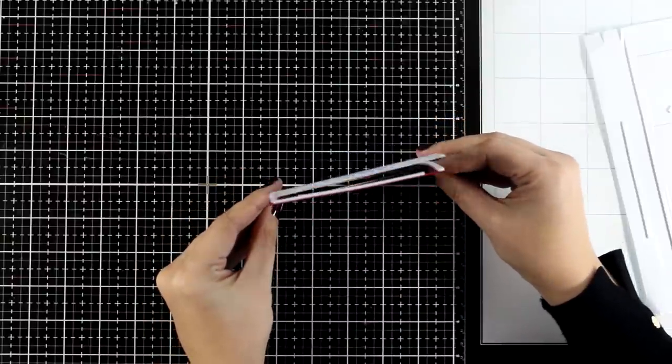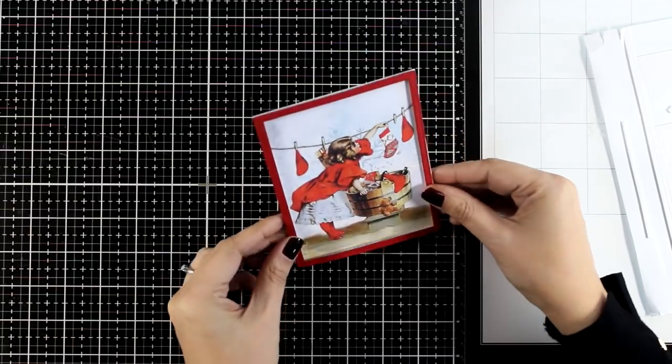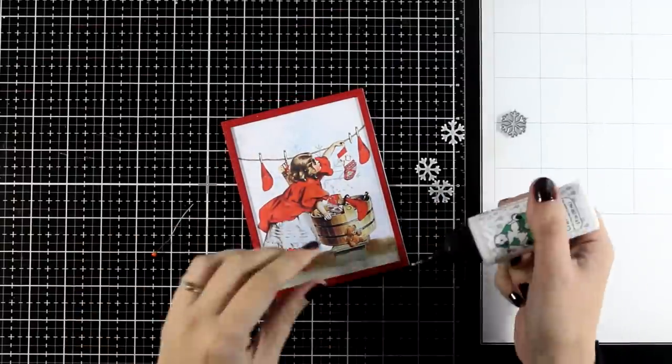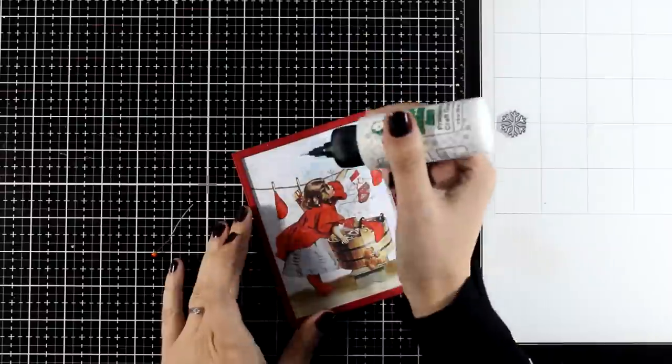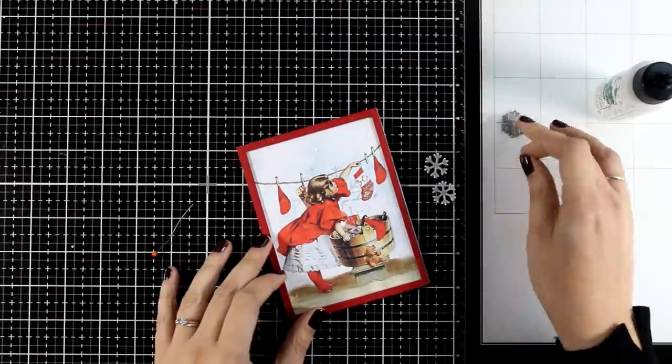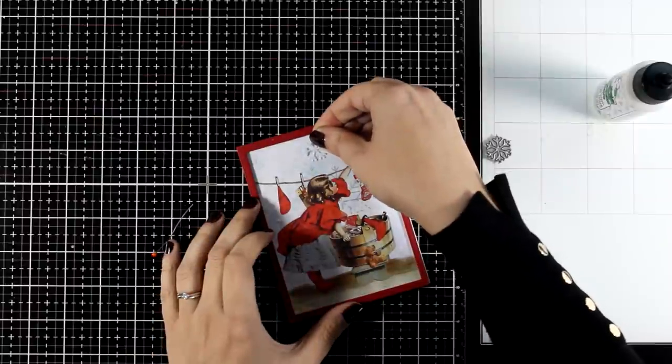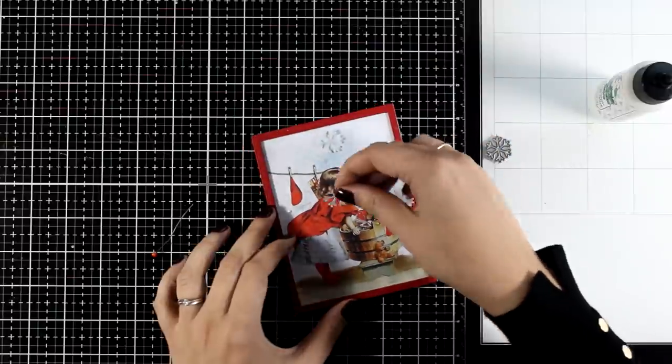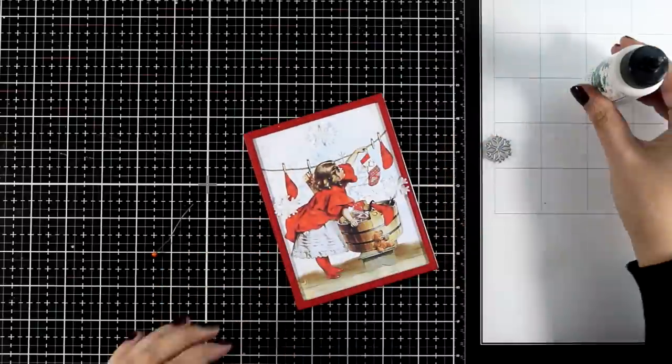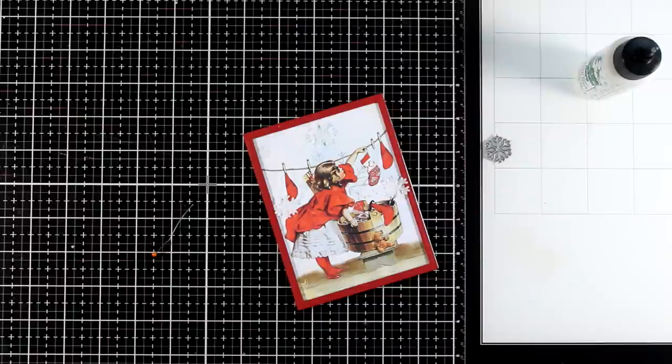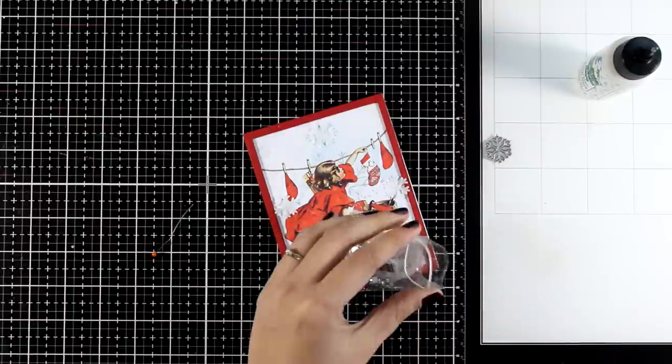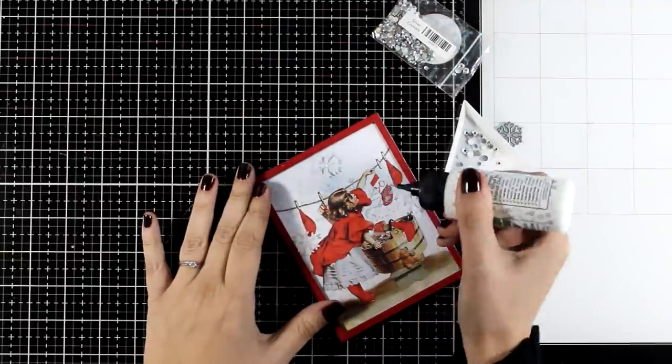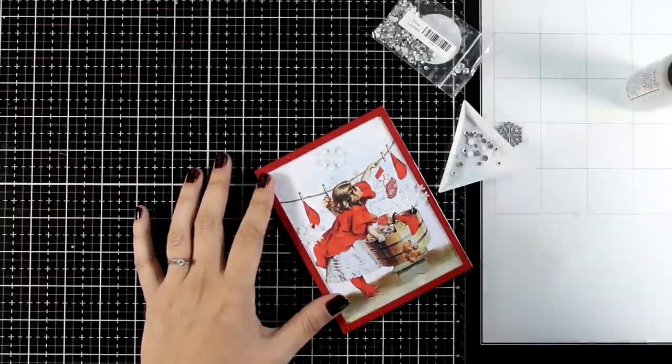For this design you can easily add acetate to turn this into a shaker card. However, I'm just going with a frame. All the cards today are going to be quite simple. After all, I'm working with beautiful pattern papers. But I'm going to show you tips and tricks to take them to the next level. I cut out a few little snowflakes with a die that I had in my stash forever and I'm just sticking them down. These add an extra element that pops on top.